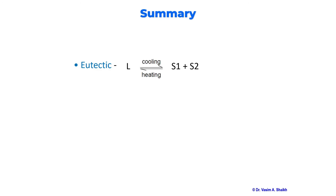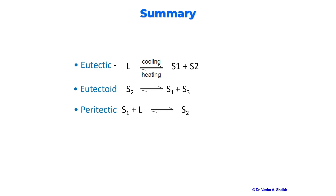To summarize: the eutectic reaction is where one liquid phase transforms into two solid phases. The eutectoid reaction is where one solid phase transforms into two solid phases. The peritectic reaction is where one solid and one liquid transform into another solid phase. All three are important invariant reactions. Thanks for watching. All the best.